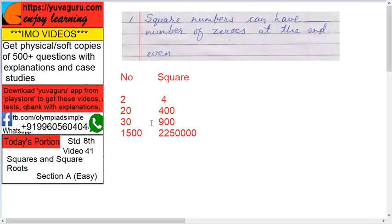1500 square is 2250000 with four zeros. So always even number. Square numbers would always have even number of zeros at the end.